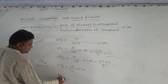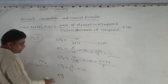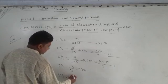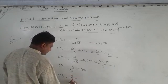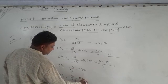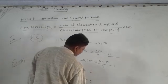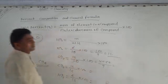For hydrogen, percentage of hydrogen is 4 upon 16 into 100. Do the calculation and you'll get the answer solved.